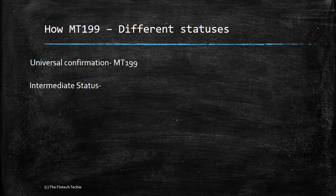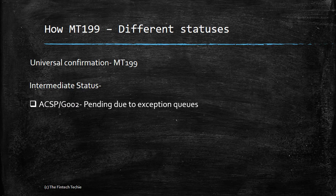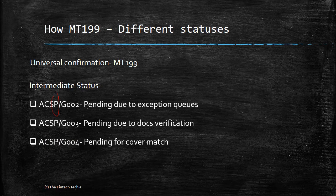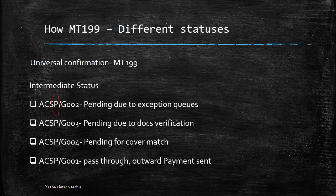Let's look at the intermediate statuses, which could be sent by the intermediary bank or by the final bank in the chain. So again, it is ACSP — the P stands for pending. Here it is G002, which could be pending due to exception queues — maybe the beneficiary bank has kept it on hold to check for AML or terrorist funding. The next one is ACSP with G003, which means some docs are pending for verification and hence the beneficiary is not credited. It could be pending for a cover match — so a cover MT-202 is pending. And finally, it could be a pass-through message sent by an intermediary bank saying they have received the message and forwarded it to the next bank in the chain — so it's an ACSP.